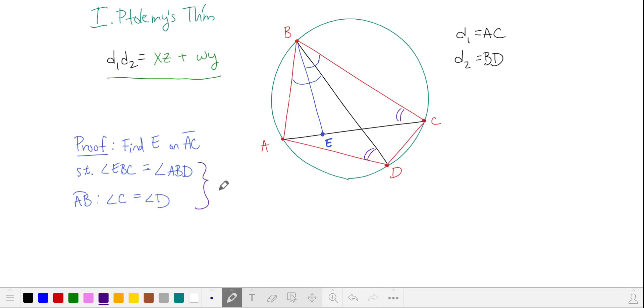So by angle-angle, we have triangle EBC is similar to triangle ABD, and so the corresponding sides BC and BD, that ratio is the same as the ratio of corresponding sides EC and AD. Multiplying by the denominators, we get this equation. We'll call this equation 1.